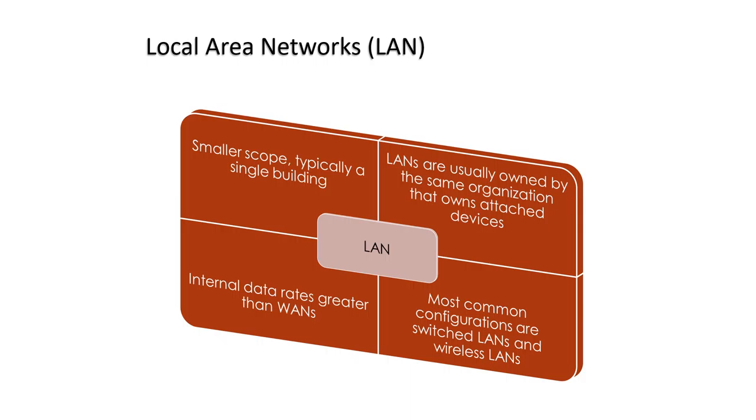Local area networks, generally called LANs, are privately owned networks within a single building or campus of up to a few kilometers in size. They are widely used to connect personal computers and workstations in company offices and factories to share resources, for example printers, and exchange information. The internal data rates of LANs are typically much greater than those of WANs, and the most common configurations are switched LANs and wireless LANs.